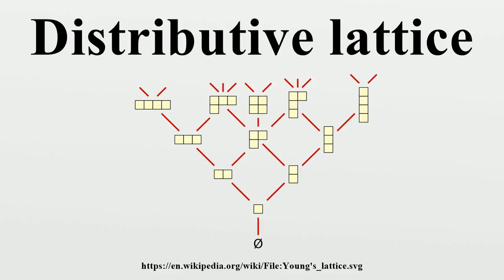Every Boolean algebra is a distributive lattice. Every Heyting algebra is a distributive lattice, which especially includes all locales and hence all open-set lattices of topological spaces. Also note that Heyting algebras can be viewed as Lindenbaum algebras of intuitionistic logic, making them a special case of the above example. Every totally ordered set is a distributive lattice with max as join and min as meet. The natural numbers form a distributive lattice with the greatest common divisor as meet and the least common multiple as join. Given a positive integer n, the set of all positive divisors of n forms a distributive lattice, again with the greatest common divisor as meet and the least common multiple as join. This is a Boolean algebra if and only if n is square-free.